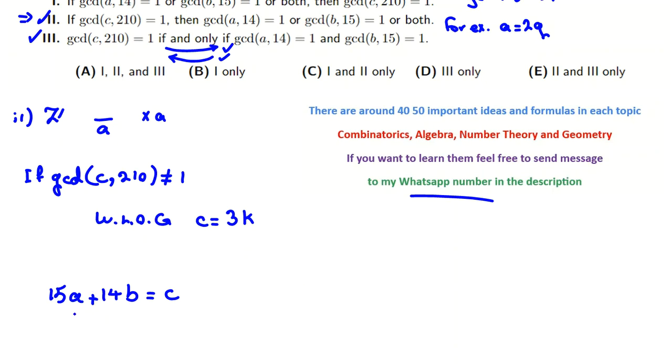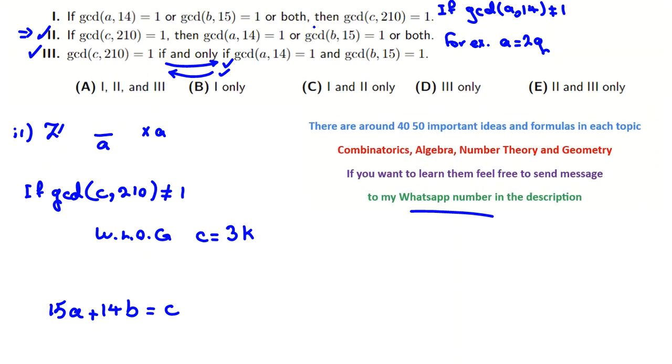It says GCD of A and 14 is 1. B and 15 is 1 or both. Then, GCD of C and 210 is 1. I'm sorry. Here is C. Let me tell you a counterexample. I will explain again second one why it is correct by logic and the table, true-false tables. So, here, for example, I want to find a thing that it says if GCD of A and 14 or this or both of them is 1, then this GCD is 1. So, I select A, for example, equal to, let's consider 7Q.